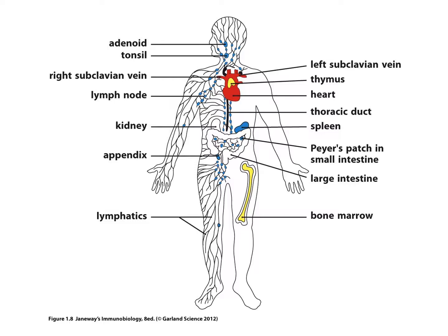Where we left off in lecture 1.1 was the discussion of the peripheral as well as the central lymphatic systems. Central will be everything located near the trunk — the primary, major lymphatic system. Everything will drain from the legs, the arms, the head towards the trunk.